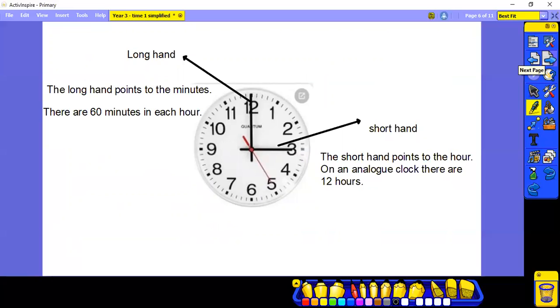They also have hands, not like our hands. So this is what we call the long hand. The long hand points to the minutes and these are the small dashes as you go round the number face. And in total, there are 60 of those. The short hand points to the hour. And on an analogue clock, there are 12 hours. We counted those on the previous slide.